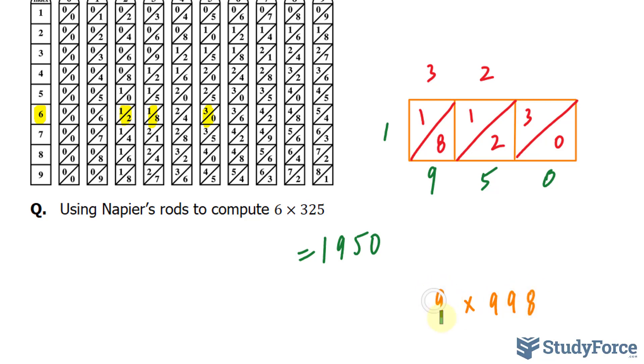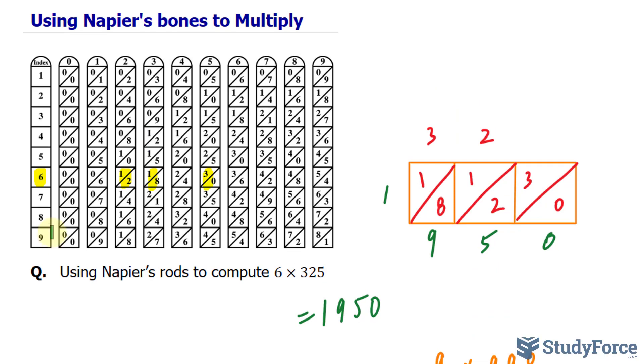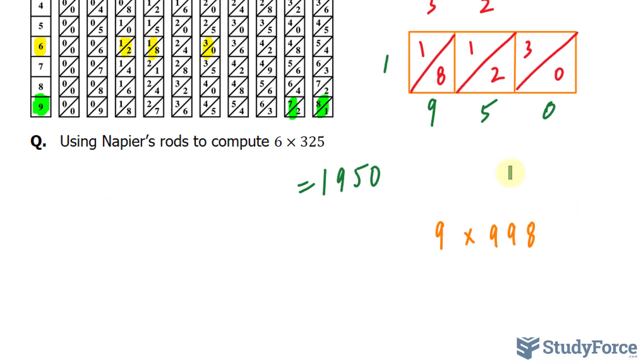Again we will locate the number 9 in the index rod. And then the number 9, 9, 8. So we have this block, again that block, and that block. So let me rewrite that.